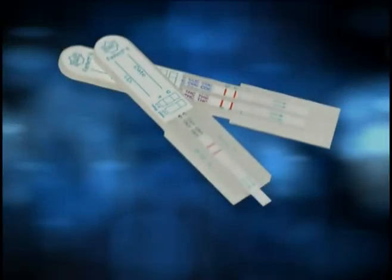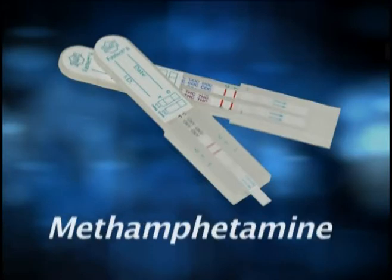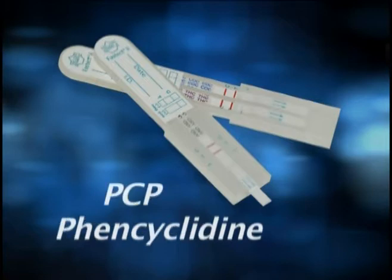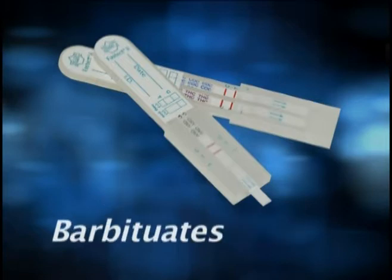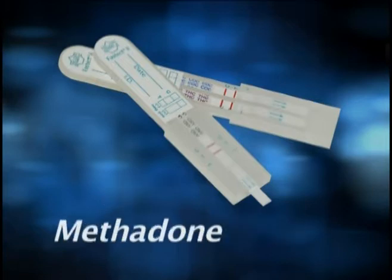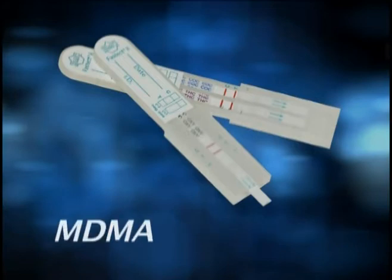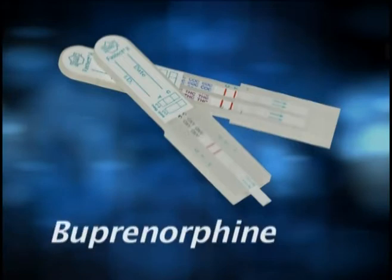FasTech II is offered in various configurations of different drugs: THC, cocaine, opiates, methamphetamine, amphetamine, PCP, benzodiazepine, barbiturates, methadone, tricyclic antidepressants, MDMA, oxycodone, and buprenorphine.